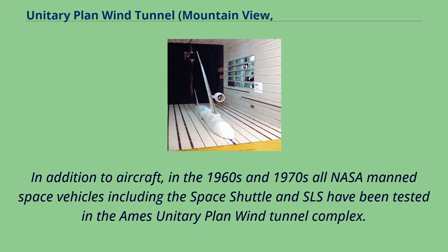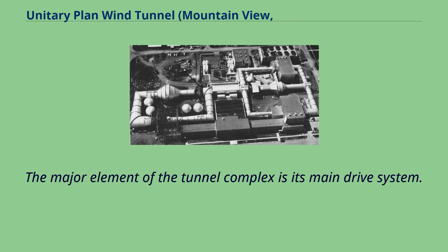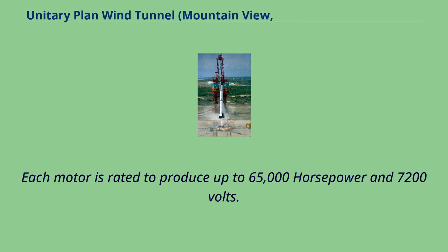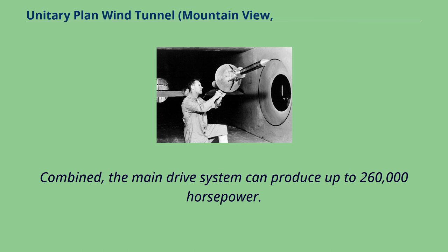In addition to aircraft, in the 1960s and 1970s all NASA manned space vehicles, including the Space Shuttle and SLS, have been tested in the Ames Unitary Plan Wind Tunnel Complex. The major element of the tunnel complex is its main drive system, which consists of four wound rotor-type induction electric motors connected in tandem. Each motor is rated to produce up to 65,000 horsepower at 7,200 volts, and combined the main drive system can produce up to 260,000 horsepower.